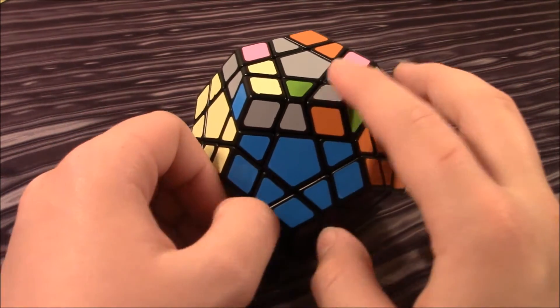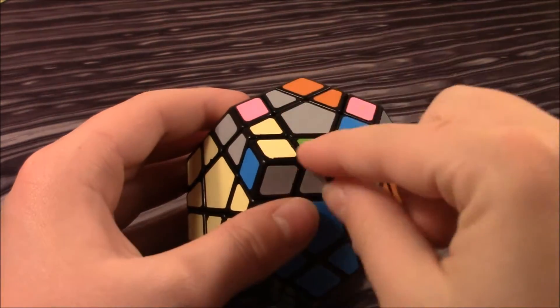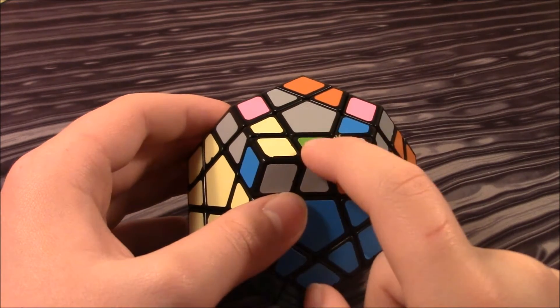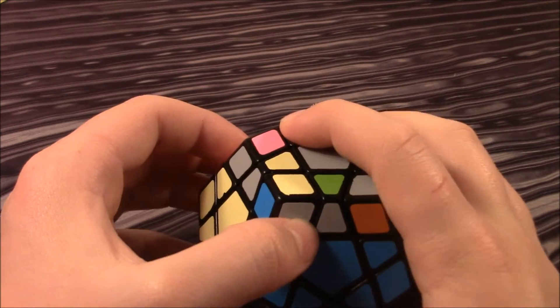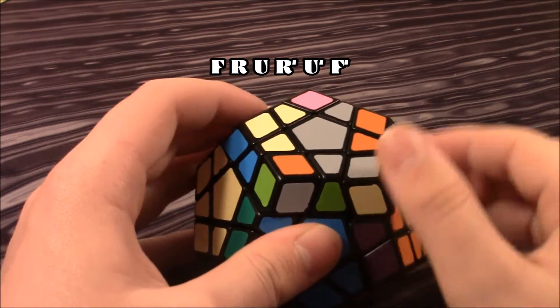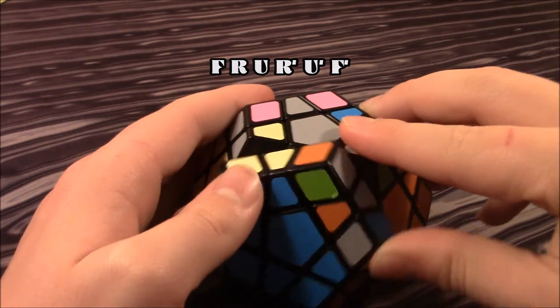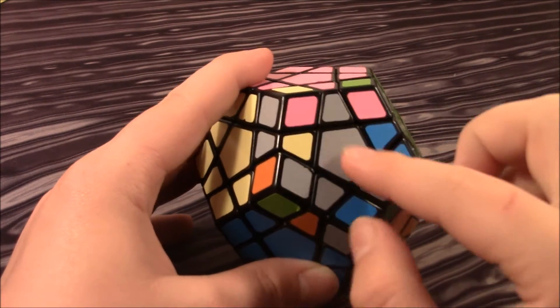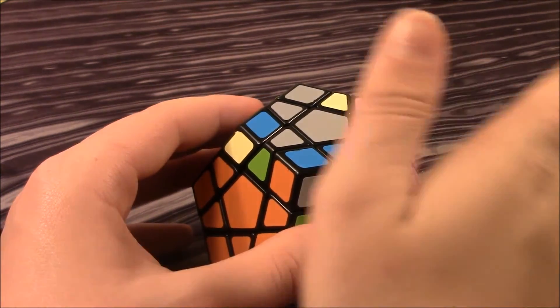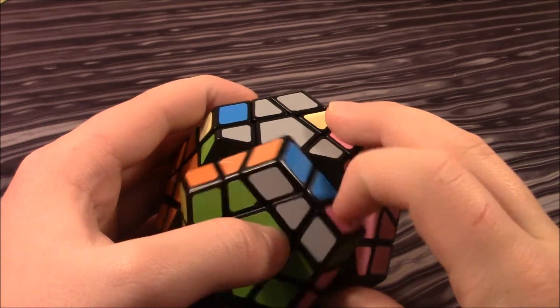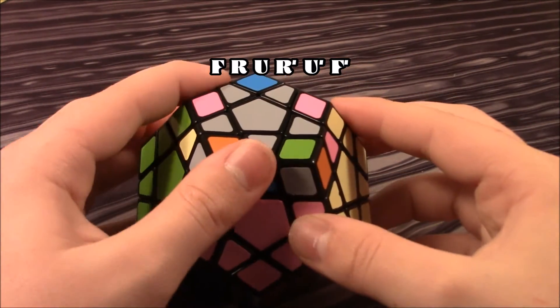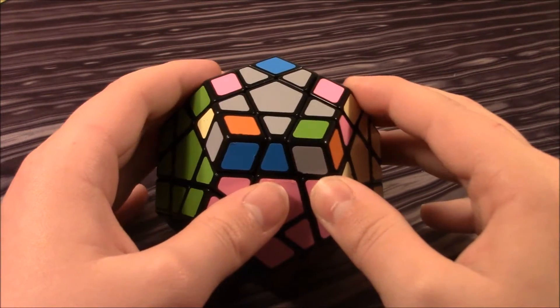So this is where the algorithms come in. Well, first you have to get the star oriented. So you take one unsolved edge in front of you and one solved one right there. And then you do F, R, U, R prime, U prime, F prime. And that will create this arrow. And you want to hold the arrow like this, so that it's facing to the right. And then do that algorithm again. F, R, U, R prime, U prime, F prime. And now that all of your star is oriented.